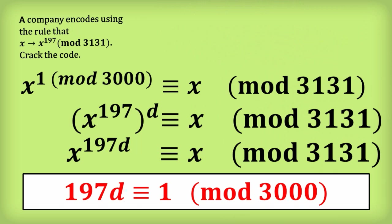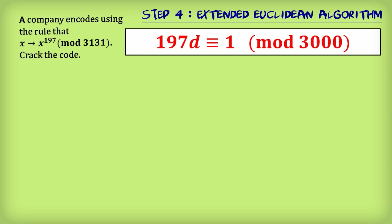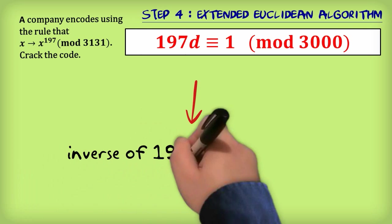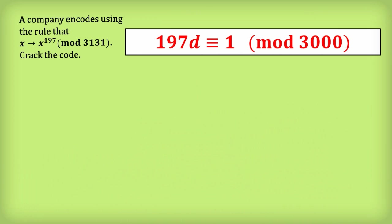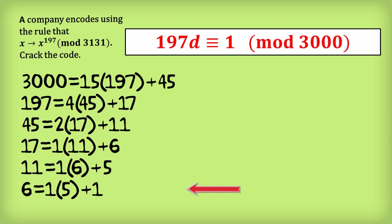Now to the final step: the extended Euclidean algorithm. The equation in red is really asking us to work out the inverse of 197 mod 3000. We take 3000 and 197 and work out the remainder, then take 197 and the remainder and work out a new remainder. We continue this process until we end up with 1 as a remainder, which is the GCD of 3000 and 197.